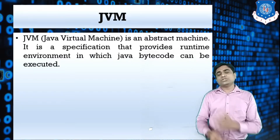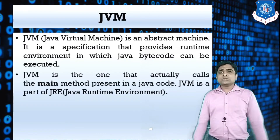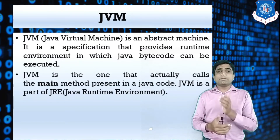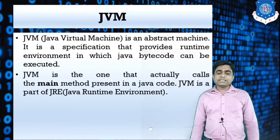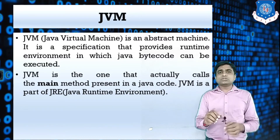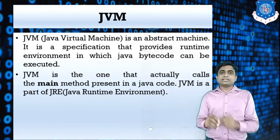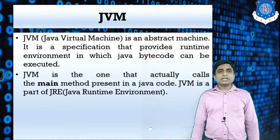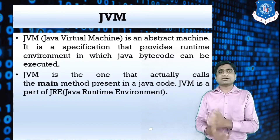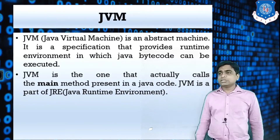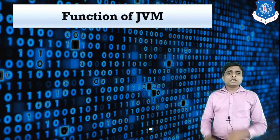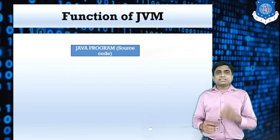JVM calls the main method present in the Java code. In every Java program there is one main method, and that main method is called by JVM. JVM is also a part of the JRE, which is the Java Runtime Environment.